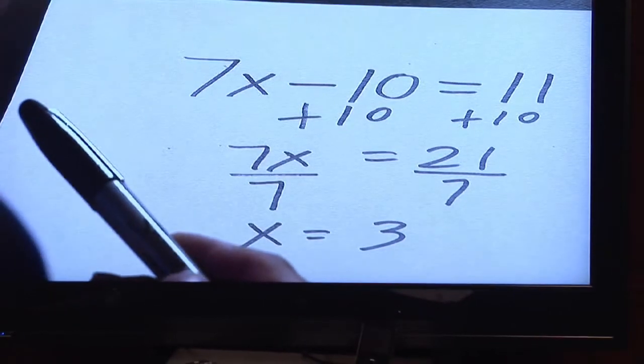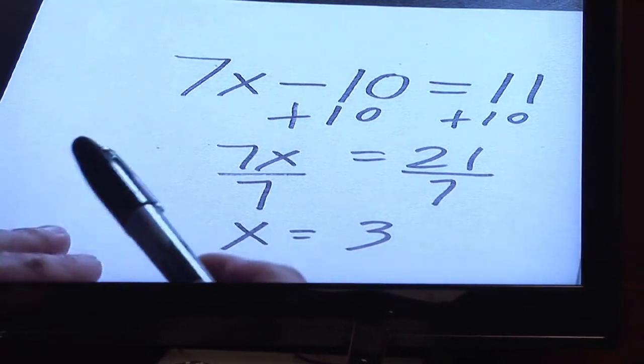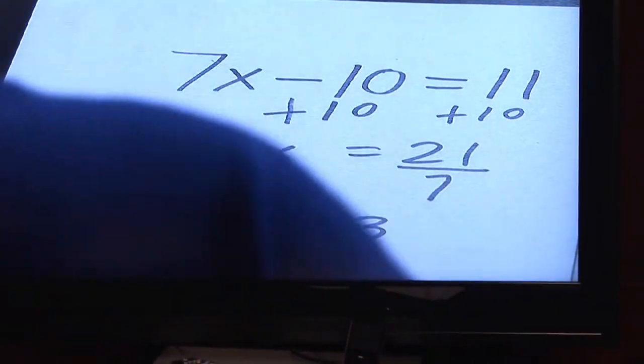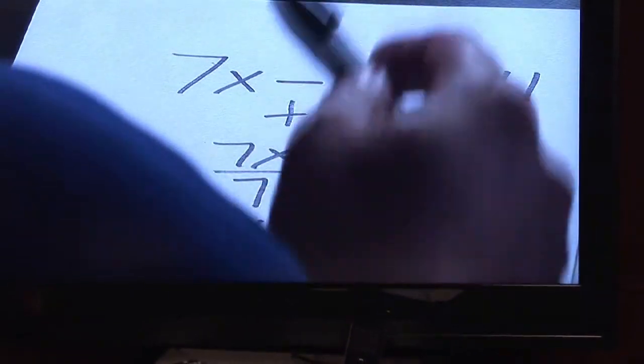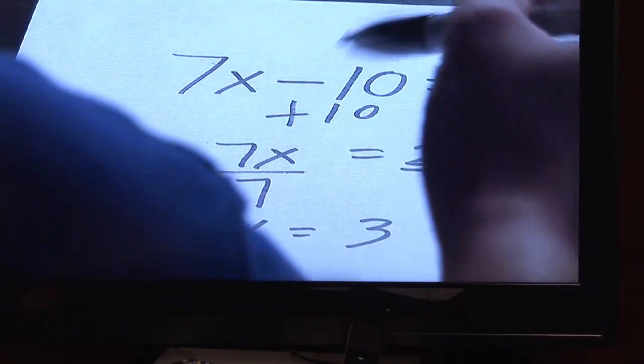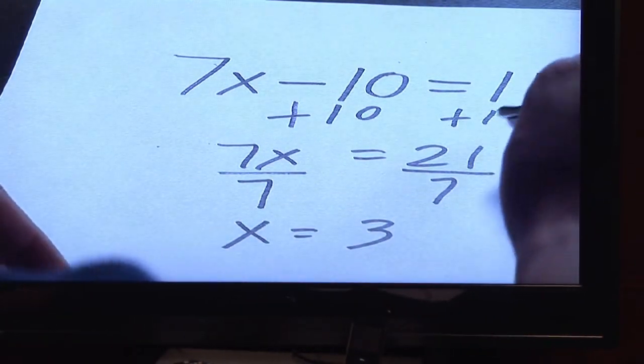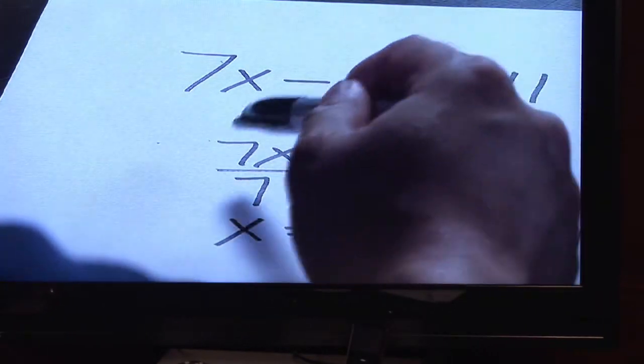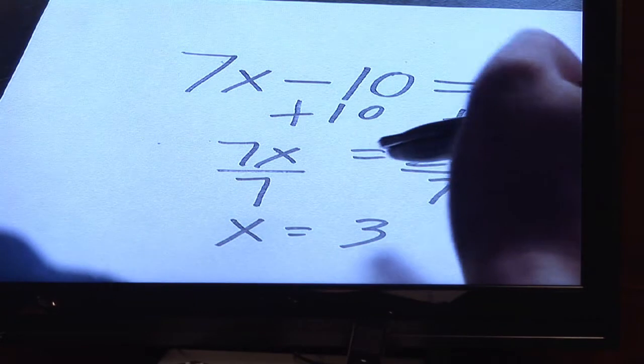Now when it comes to solving equations, with 7x minus 10 is equal to 11, when you're solving for variables, it's very important that you get the non-related terms over to the other side. That's why we go from this step to this step. Move the 10 over and then afterwards, isolate the variable by dividing by 7.